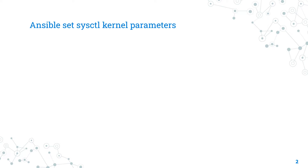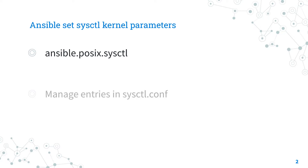Today we are going to talk about the Ansible module sysctl. The full name is ansible.posix.sysctl, which means it is part of the collection ansible.posix, used to interact with POSIX platforms. The purpose of the module is to manage entries in sysctl.conf.